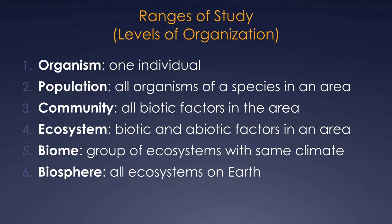As a review: we have an organism — one individual. A population is many of the same organism, like many human beings in Santa Barbara. A community is all the living factors in an area — humans, dogs, cats, ants, and plants all in Santa Barbara. An ecosystem is the living and non-living, biotic and abiotic factors. A biome is a group of ecosystems with the same climate, like a desert or rainforest. And the biosphere is all the ecosystems on Earth.